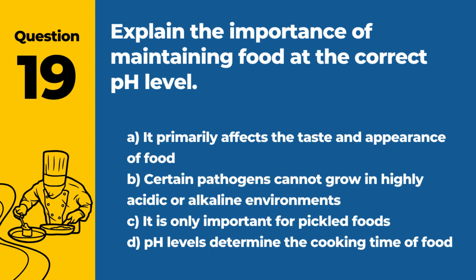Question 19: Explain the importance of maintaining food at the correct pH level. a. It primarily affects the taste and appearance of food. b. Certain pathogens cannot grow in highly acidic or alkaline environments. c. It is only important for pickled foods. d. pH levels determine the cooking time of food. Answer: b. Maintaining the correct pH level in food is crucial, as certain pathogens cannot grow in environments that are too acidic or too alkaline.